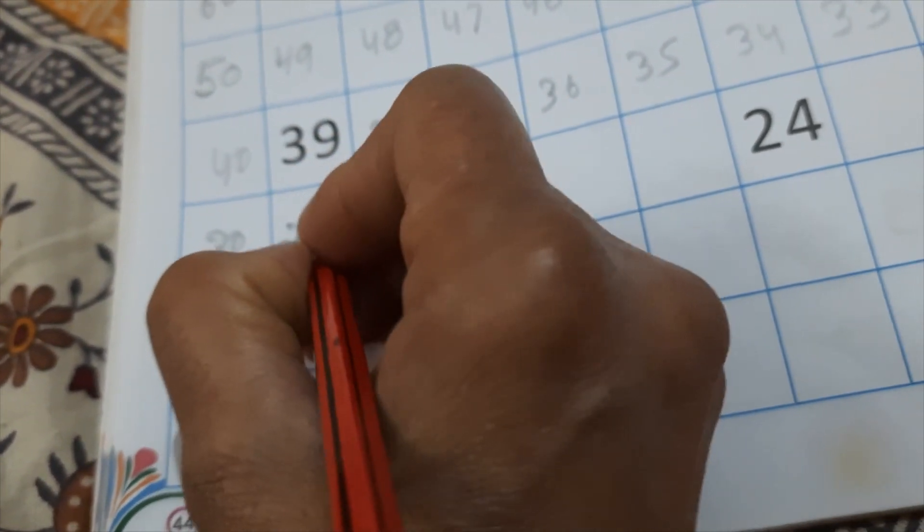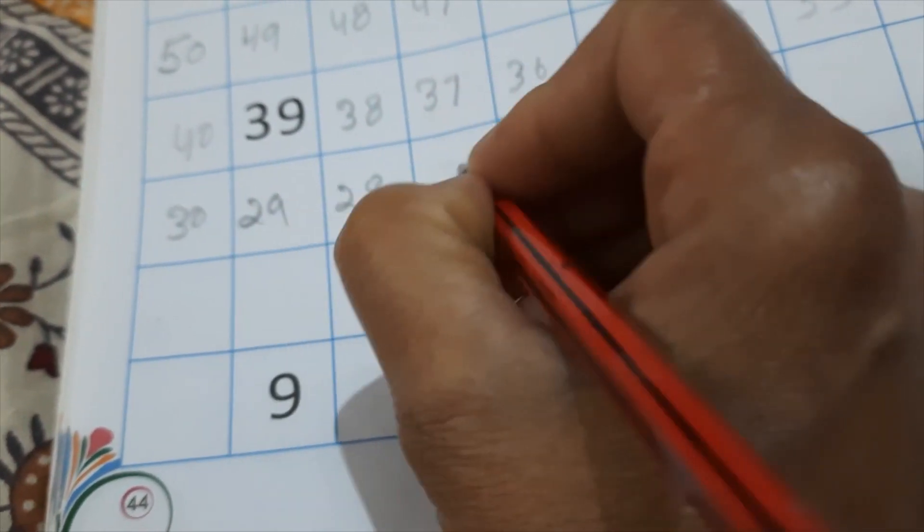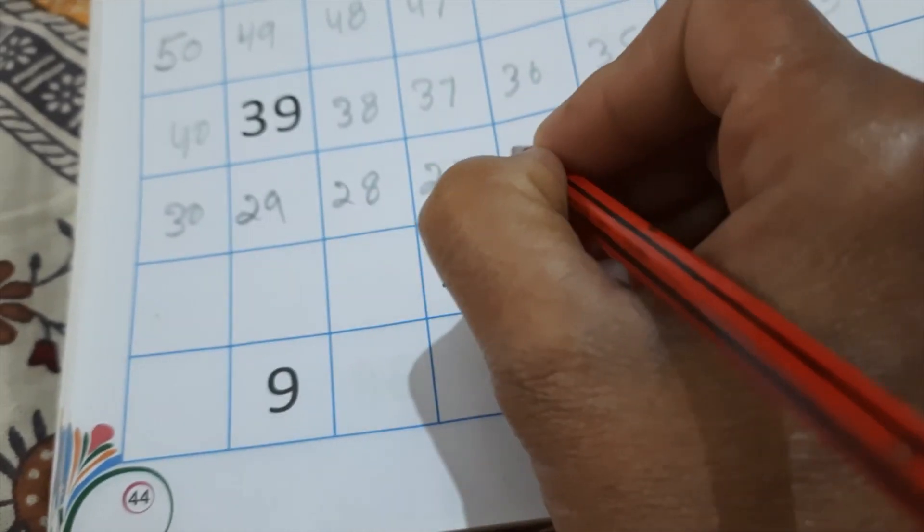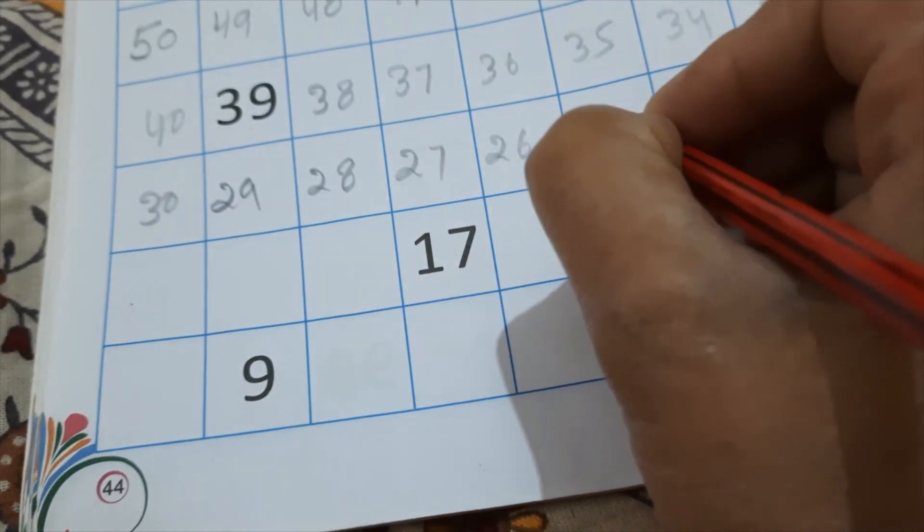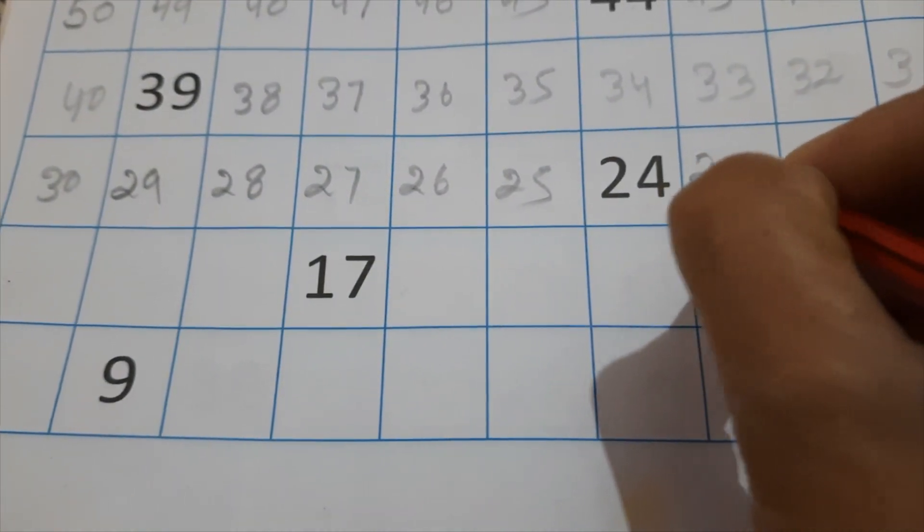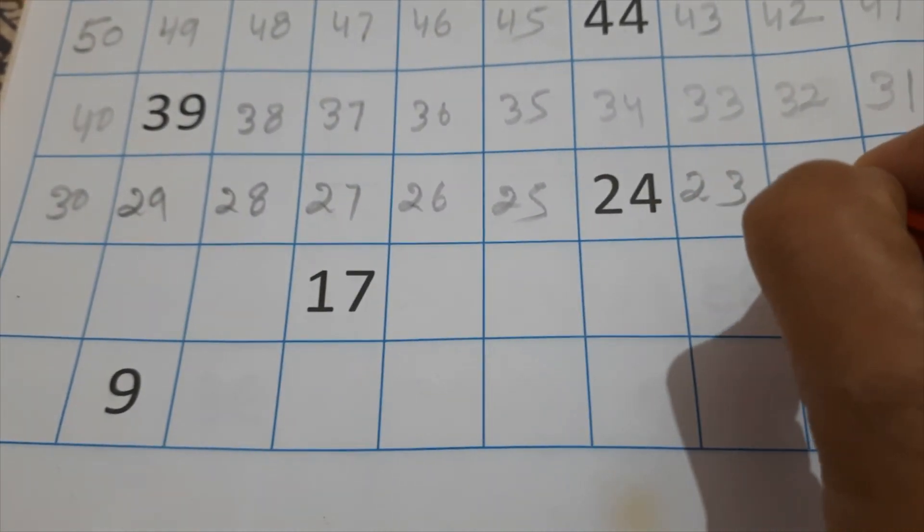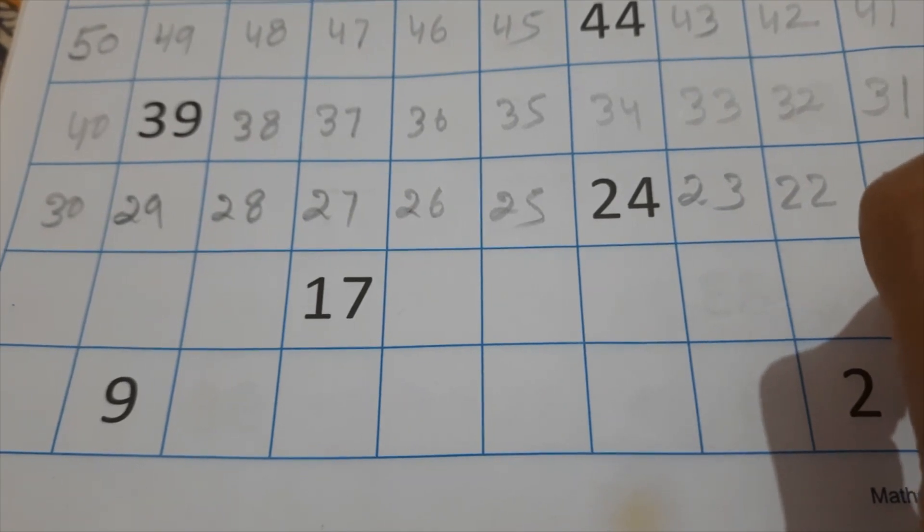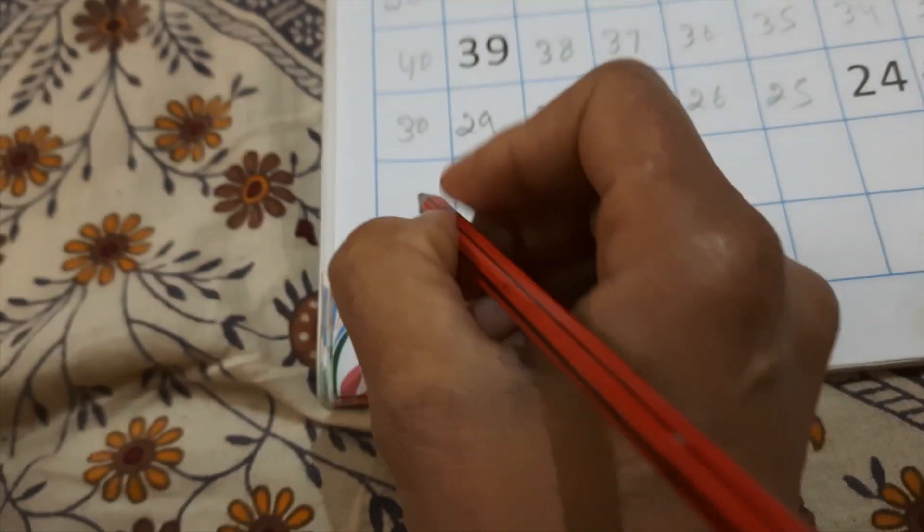29, 28, 27, 26, 25, 24 is already right. 23, 22, 21, 20.